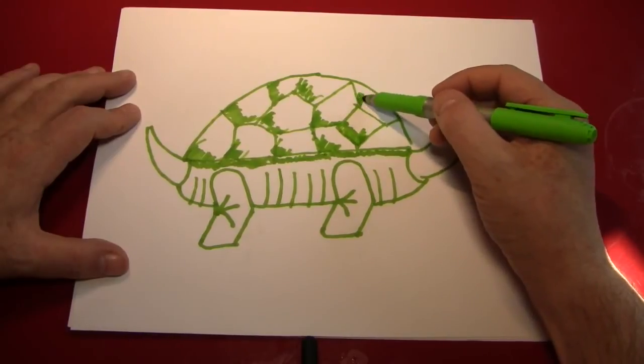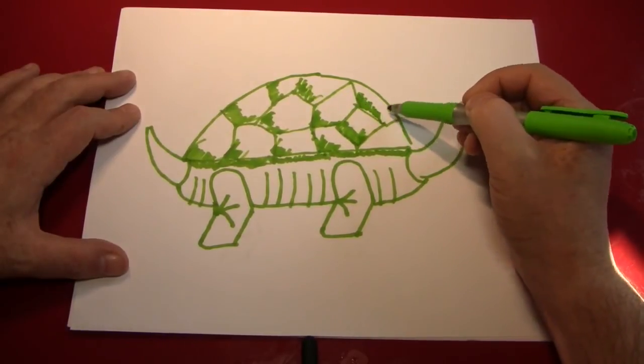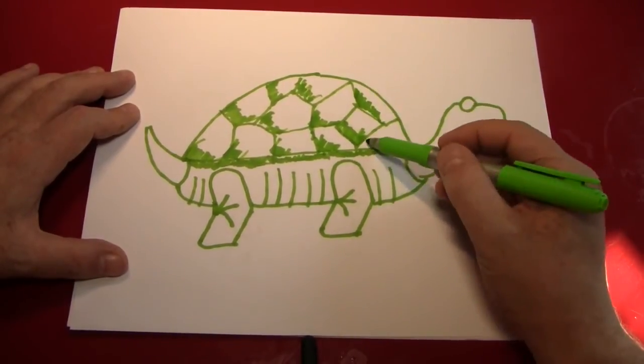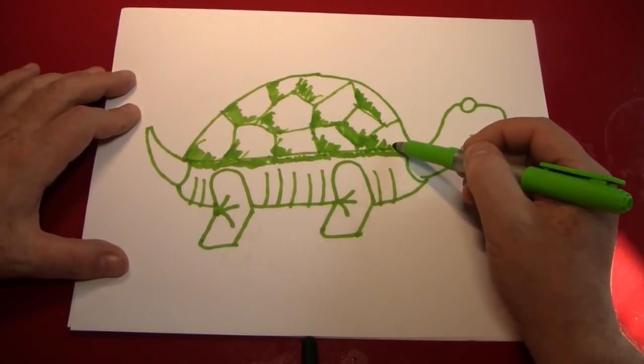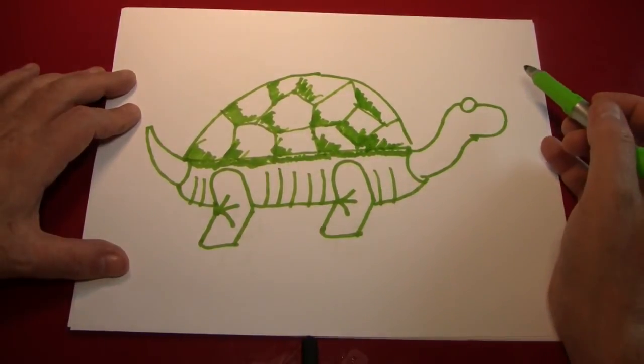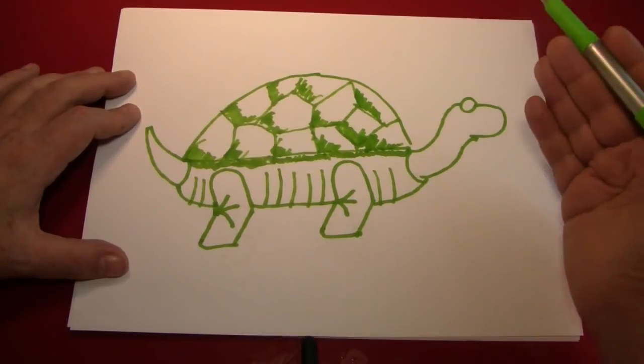Now, tortoises can live to over 100 years old. And the oldest living tortoise is 182 years old, they believe. And his name is Jonathan.